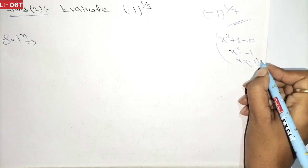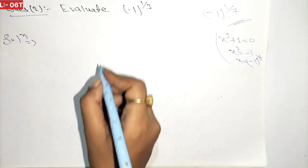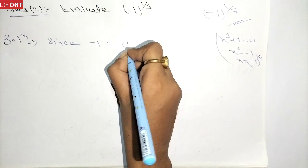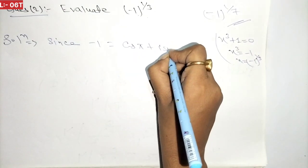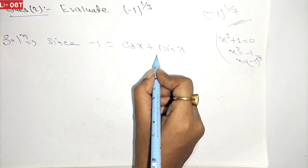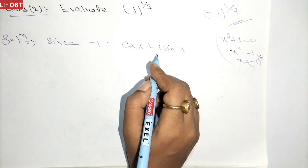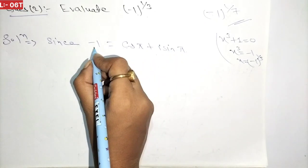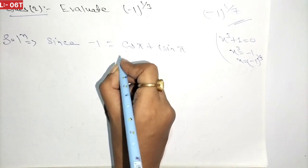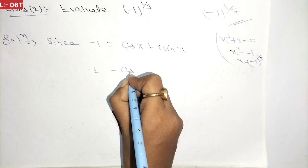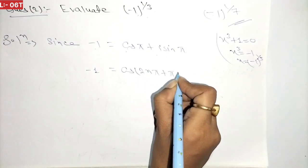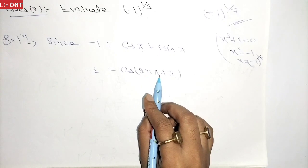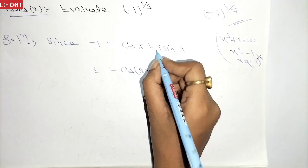Since minus 1 can be written in polar form as cos π plus i sin π, and using the periodicity property we can write it as cos(2nπ + π) plus i sin(2nπ + π). This is because cos(2nπ + θ) equals cos θ — this is the circular form we use.